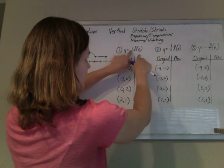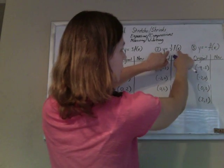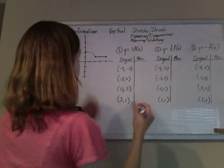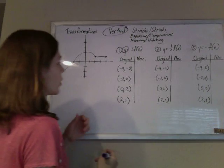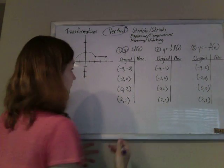y is going to be 3 times what it was before. y is going to equal 1 half what it was before. y is going to be the negative of what it was before. So all of the vertical transformations are affecting the y values. And so when we're making our new points, all the x values are going to stay the same.